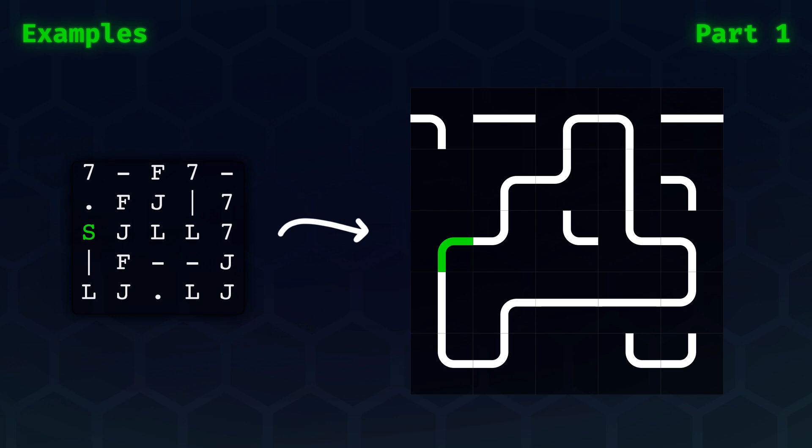If we visualize the example input, then it looks as follows. The green corner is our starting point, and there is one big single loop. Some pipe segments and empty spaces are scattered around, but they are detached from the loop itself.